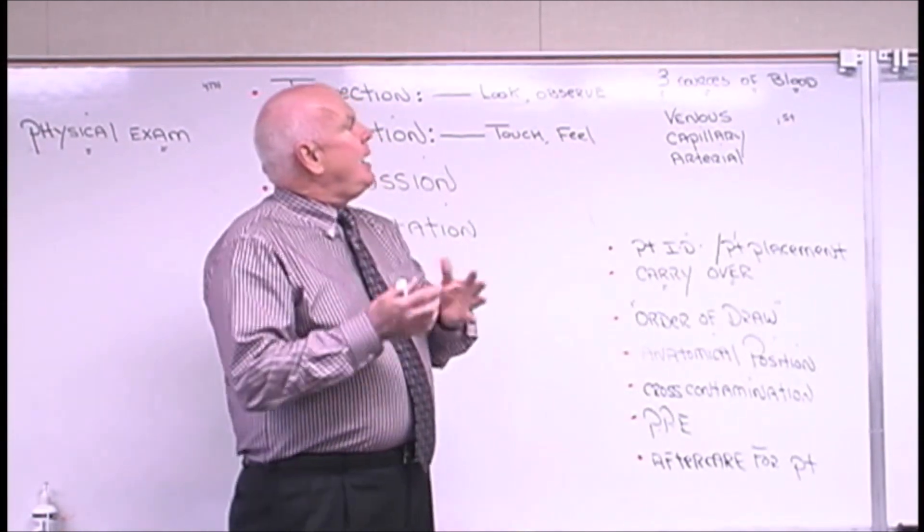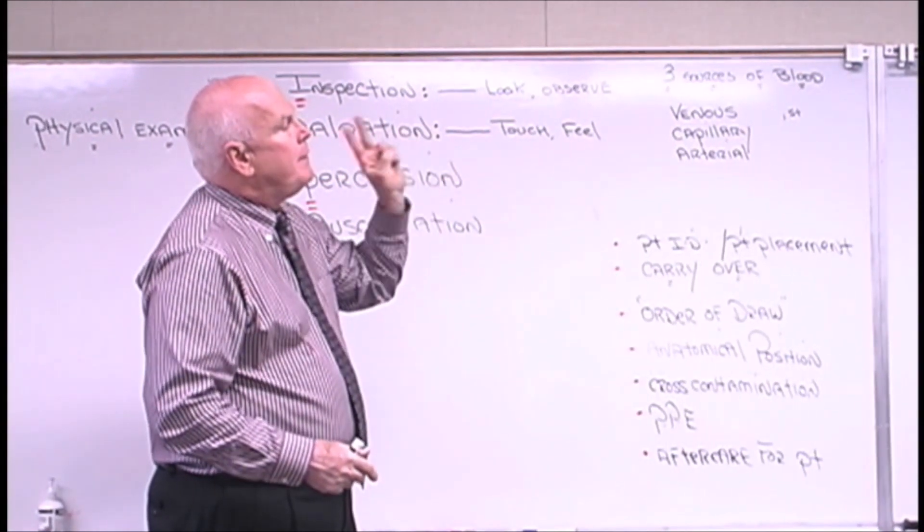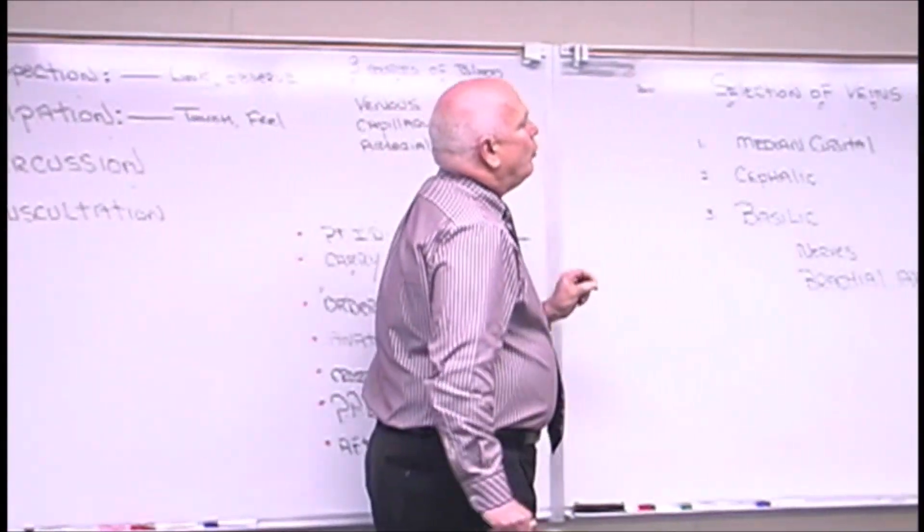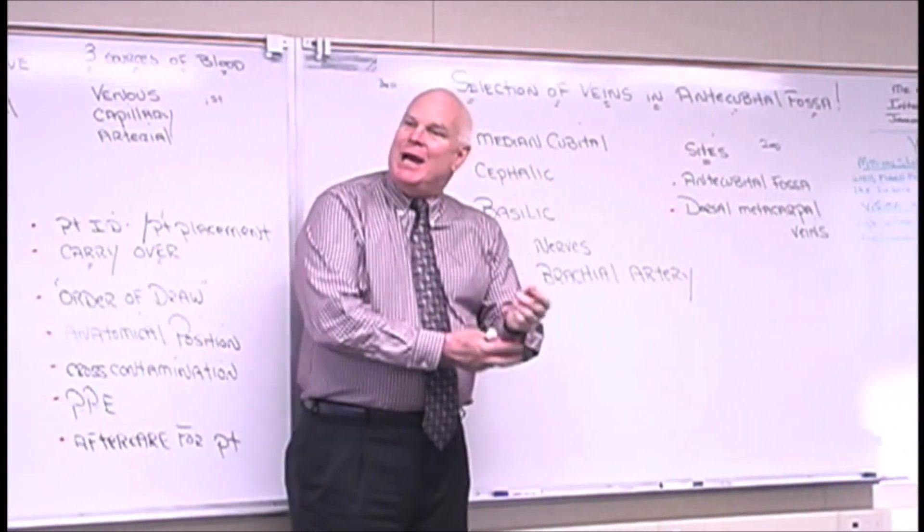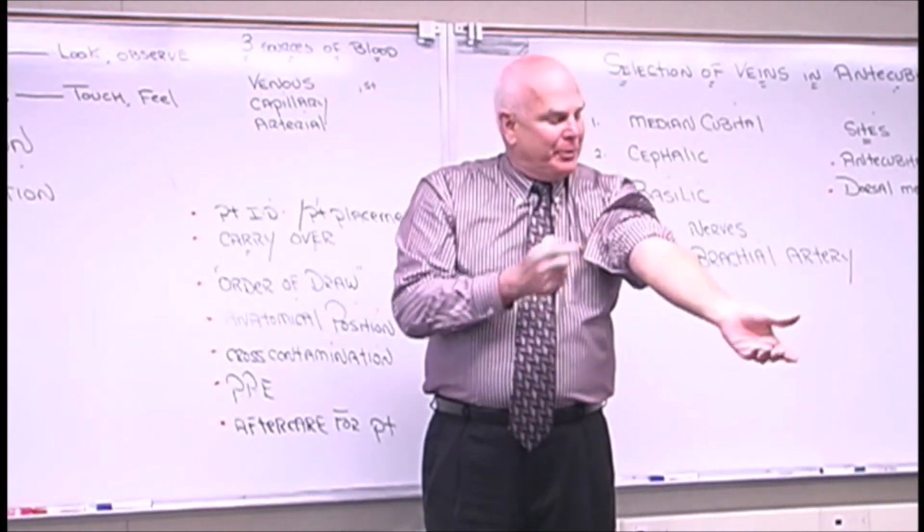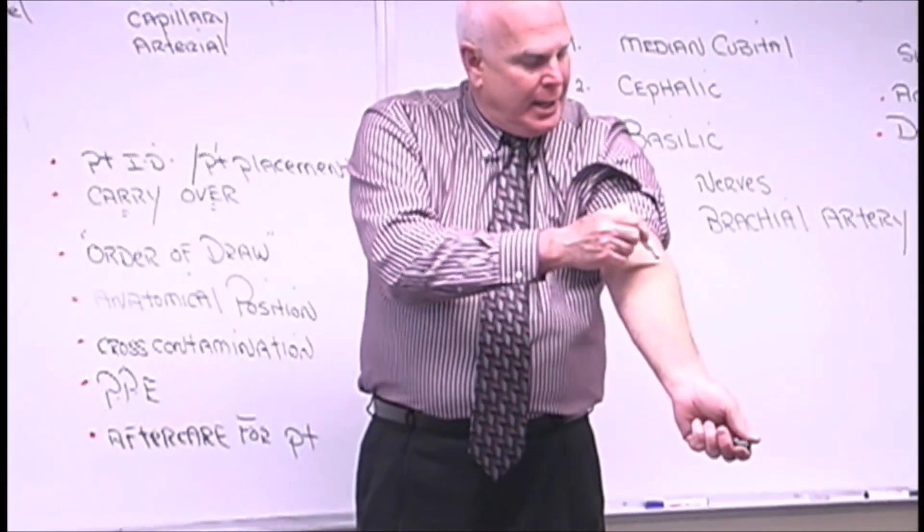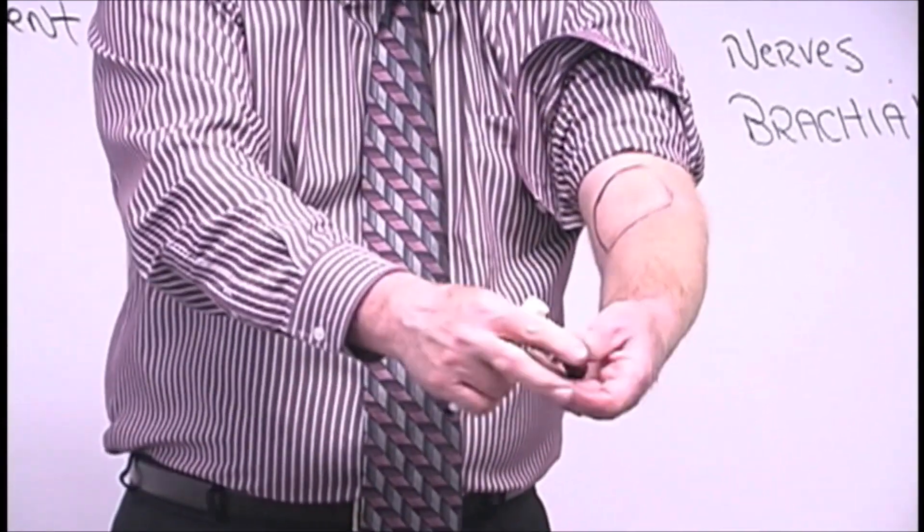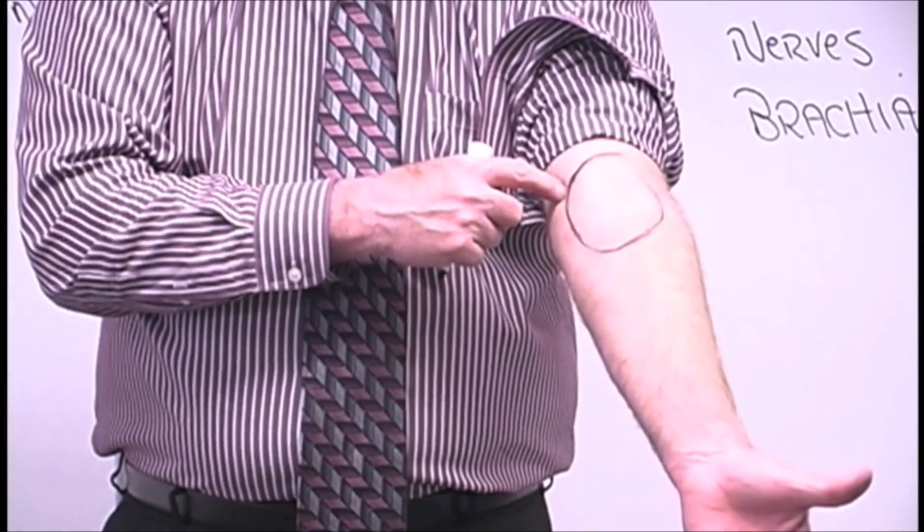There are two sites that we recommend you stick to when doing venipunctures. One is called the antecubital fossa. If I were to roll my shirt up and draw a circle right around this area of my arm, this would be considered the antecubital fossa. This is one site that CLSI and the standards have recommended.